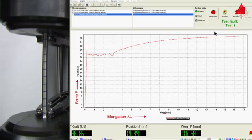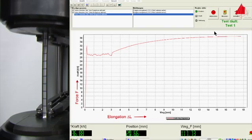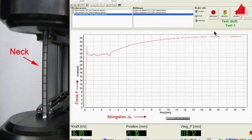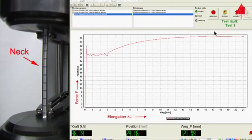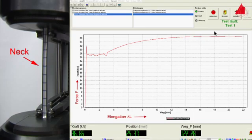As soon as the maximum force is reached, a neck begins to form at one point of the test piece. All further plastic deformation now only takes place at the neck, and eventually the test piece fractures there.